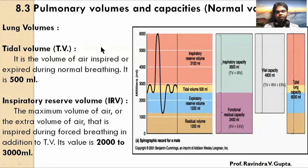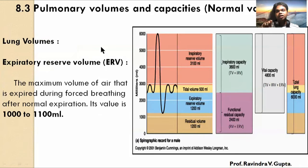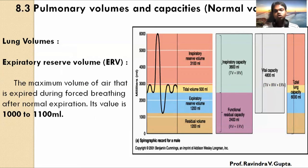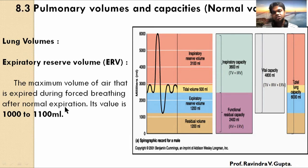The next part is Expiratory Reserve Volume. Expiratory means air going out of the lungs. During forceful expiration — forceful exhalation — how much air goes out of our body and lungs, that volume is called Expiratory Reserve Volume. It is the maximum volume of air expired during forceful breathing after normal expiration. Its value is 1000 to 1100 ml.